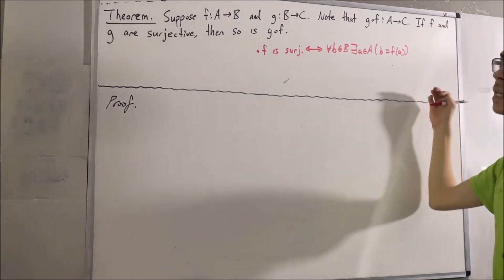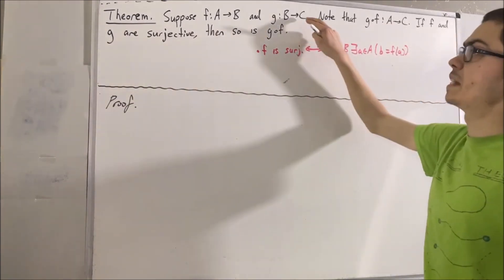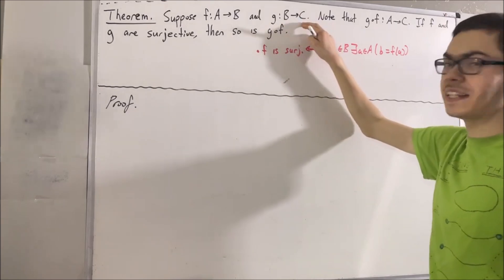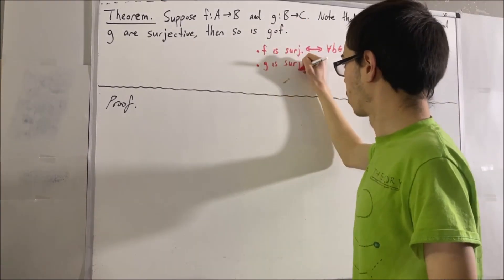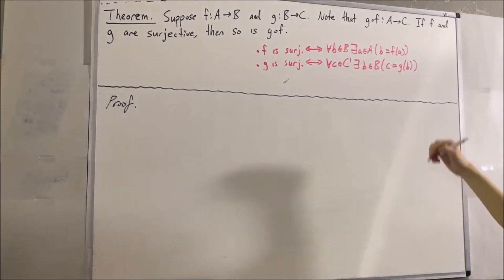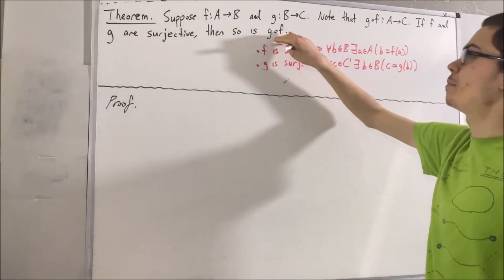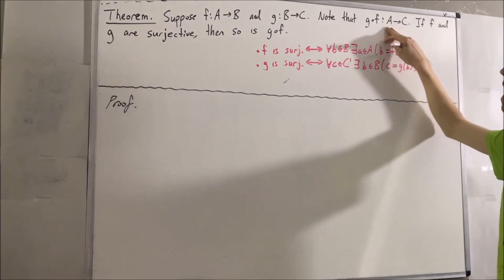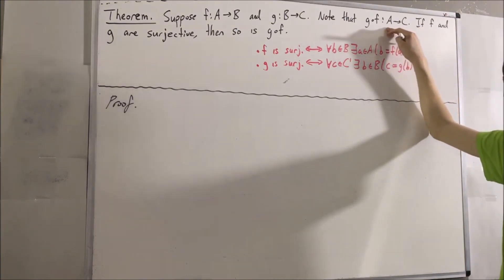And similarly, to say that g is surjective, it means that for every element c in C, there is an element b in B such that c equals g of b. And lastly, what does it mean for g compose f to be surjective? It means that for every element c in C, there is an element a in A such that c equals g compose f of a.